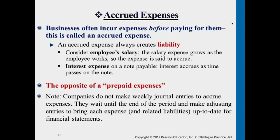Note that companies do not usually make weekly journal entries for these accumulated expenses. We wait until a certain date — typically before issuing financial statements. By May 31st, June 30th, or July 31st, the company will record accumulated expenses, expired prepayments, and depreciation expense, all together before financial statements are issued.